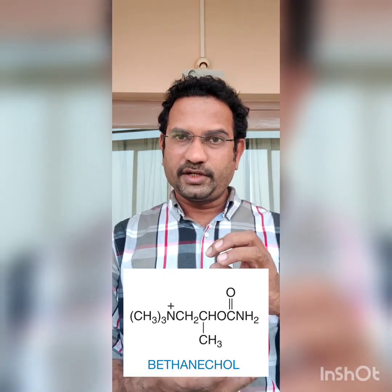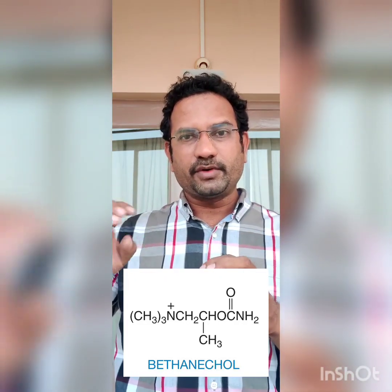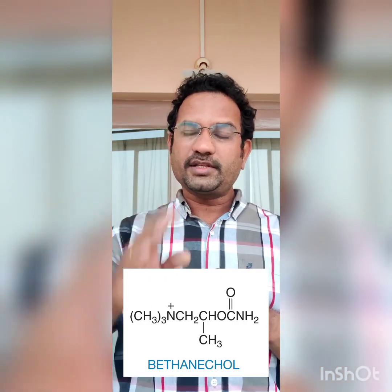Now the last modification. We have seen steric parameters and electronic parameters — add both of them to Acetylcholine, and you will get Bethanechol: a methyl side group and a carbamic acid derivative. Bethanechol has a very good duration of action. It can be used to treat gastric atonia, urinary retention, and abdominal distension — all these conditions can be treated by Bethanechol.